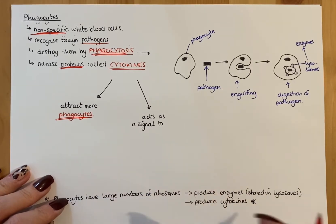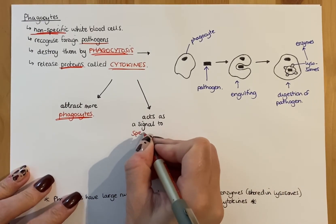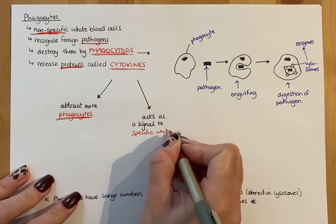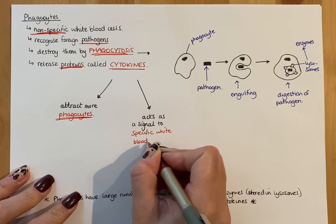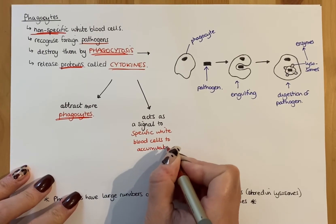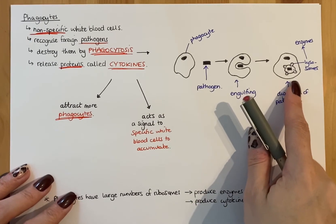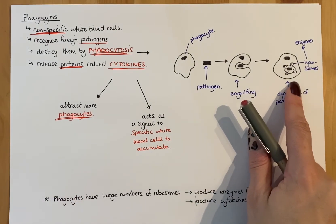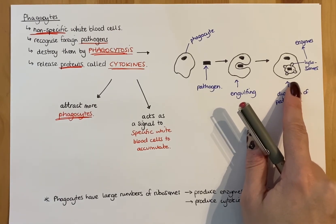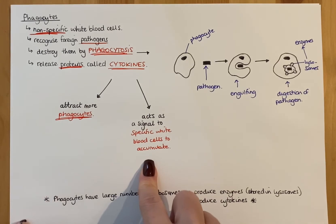So you're not just going to have a few phagocytes at that infection site - cytokines produce more chemicals that wave a flag saying 'come to this infection site, we need more help.' Cytokines also do something really important that leads on to the next topic: they act as a signal to bring specific white blood cells in and tell them to accumulate. Remember, phagocytes are non-specific - they don't particularly recognize anything specific about the pathogen, just that it's not part of the body. So cytokines trigger the specific immune response to deal with the infection in the long term.